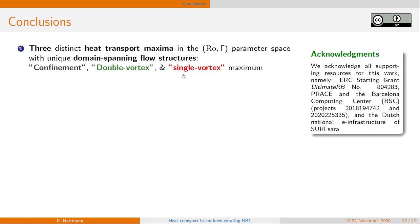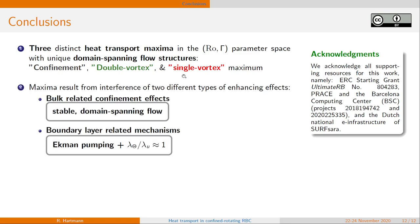So, let me conclude. We observe three distinct heat transport maxima in the parameter space of rotation and confinement with unique domain spanning flow structures. The maxima result from an interference of two different types of enhancing effects. We have the bulk related confinement effects like stable domain spanning flow, and the boundary layer related mechanisms like Ekman pumping and the beneficial boundary layer thickness ratio, which increase the efficiency of heat transferred from boundary layer to bulk and vice versa.